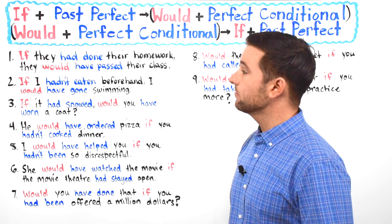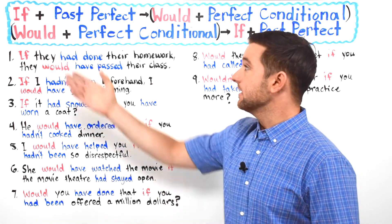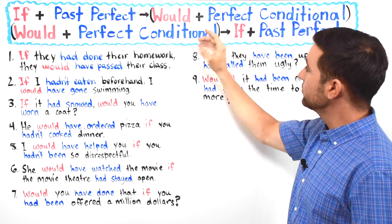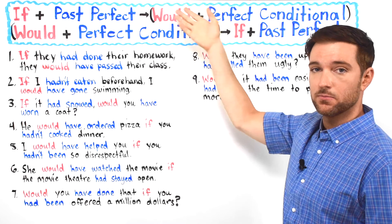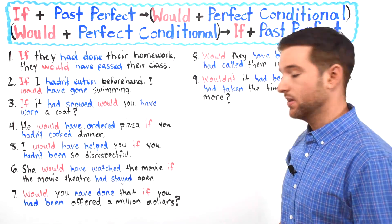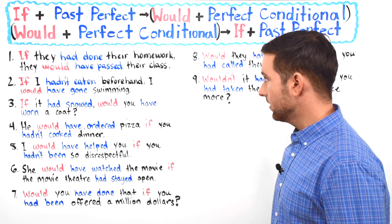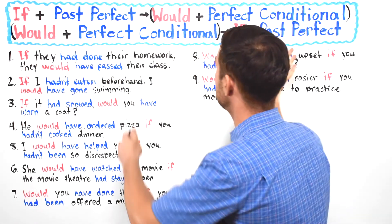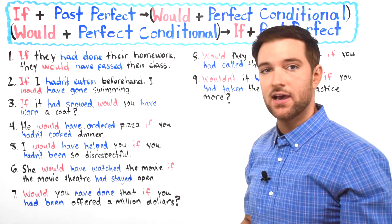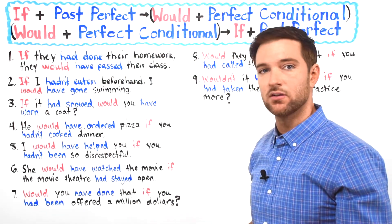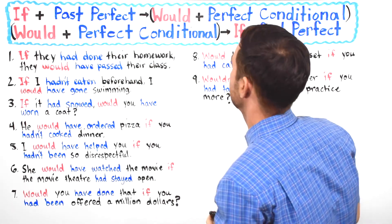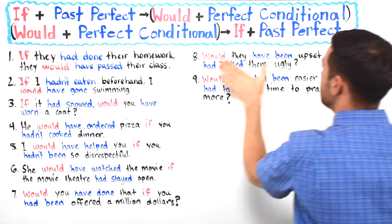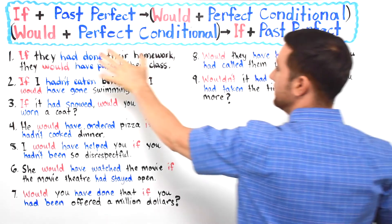Now today, in the conditional we're going to look at, we're going to talk about one which uses the past perfect tense. We form the type 3 conditional by using 'if' and then the past perfect, and then later we have the perfect conditional with 'would' in the beginning. Also, just so you know, you can switch it — instead of putting 'if' plus the past perfect at the beginning, you can put it at the end and put the perfect conditional in the front.